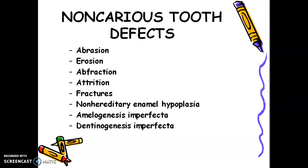Hello, this is Dr. Marge and today we will discuss non-carious tooth defects. Not all procedures that we do in the clinic are just caries. We do operative dentistry and restoration also with non-carious tooth defects. For example, abrasion, erosion, abfraction, attrition, fractures, non-hereditary enamel hypoplasia, amelogenesis imperfecta, and dentinogenesis imperfecta. In addition to that, we can also do diastema closure with non-carious tooth defects.